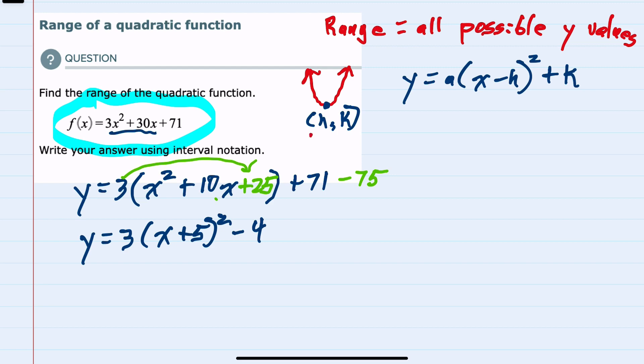From here we can see that our vertex (h, k)—first, the h in this form is the opposite of the number behind the x, so the opposite of 5, which is -5. And the k is the number outside the parentheses, here -4. So our vertex is (-5, -4).